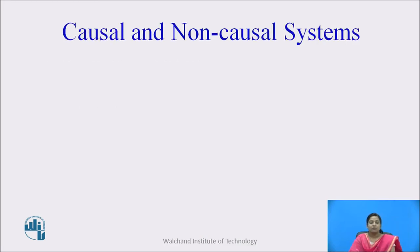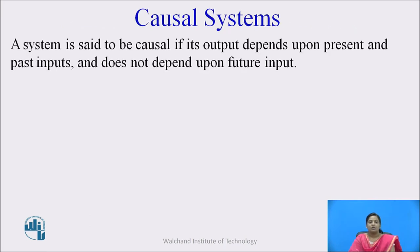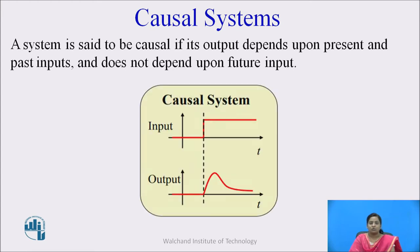Let us see the causal and non-causal system. A system is said to be causal if its output depends upon the present and past inputs and does not depend upon the future input. So for the present input, the output depends upon the present value as well as the past value of the input, but not the future value.